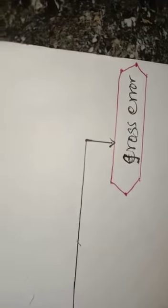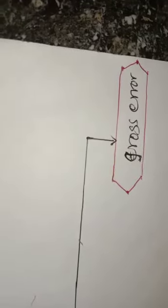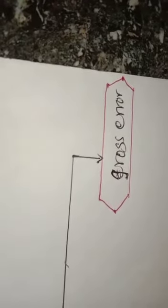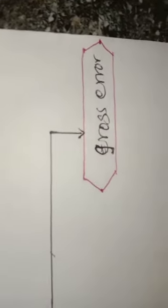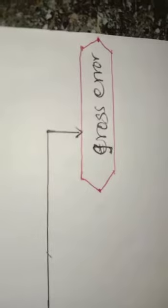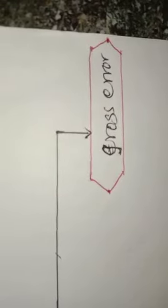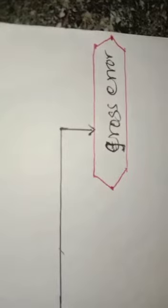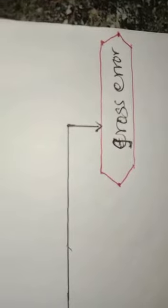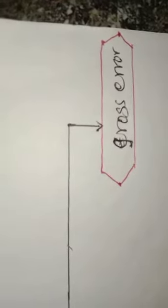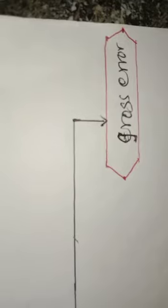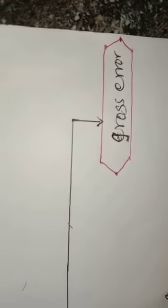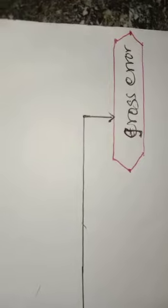Gross error is nothing but the error caused due to the total carelessness of the observer. For example: reading the instrument without setting it properly, taking observations in a wrong manner without bothering about sources of error and precautions, and recording wrong observations or using wrong values in calculation. These are examples of gross error.